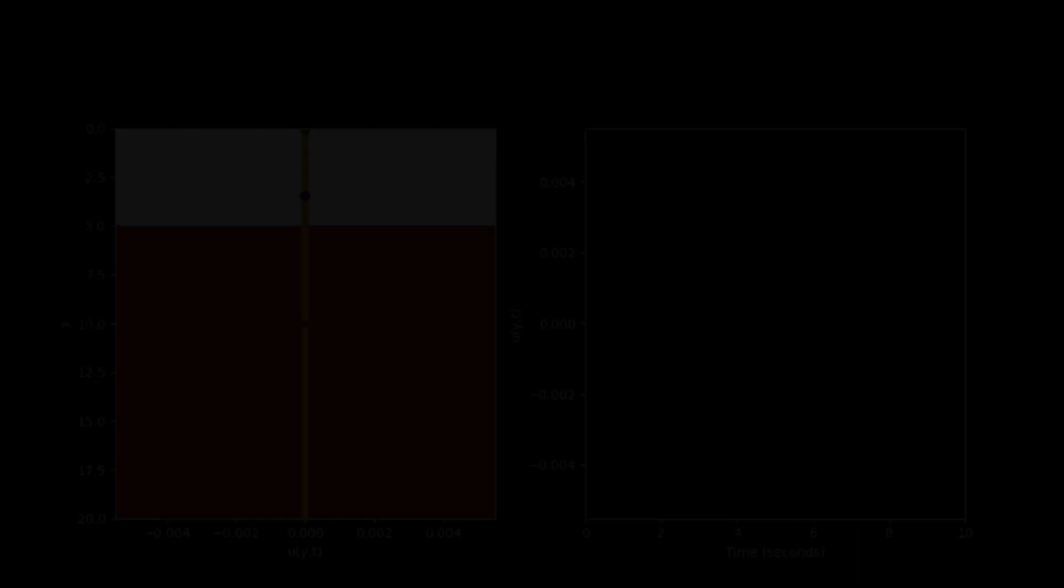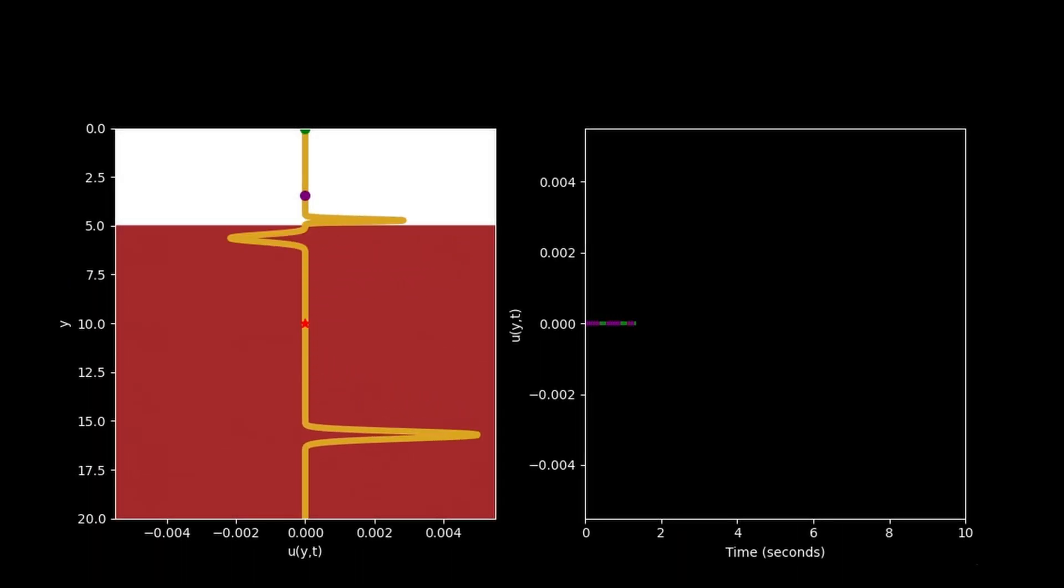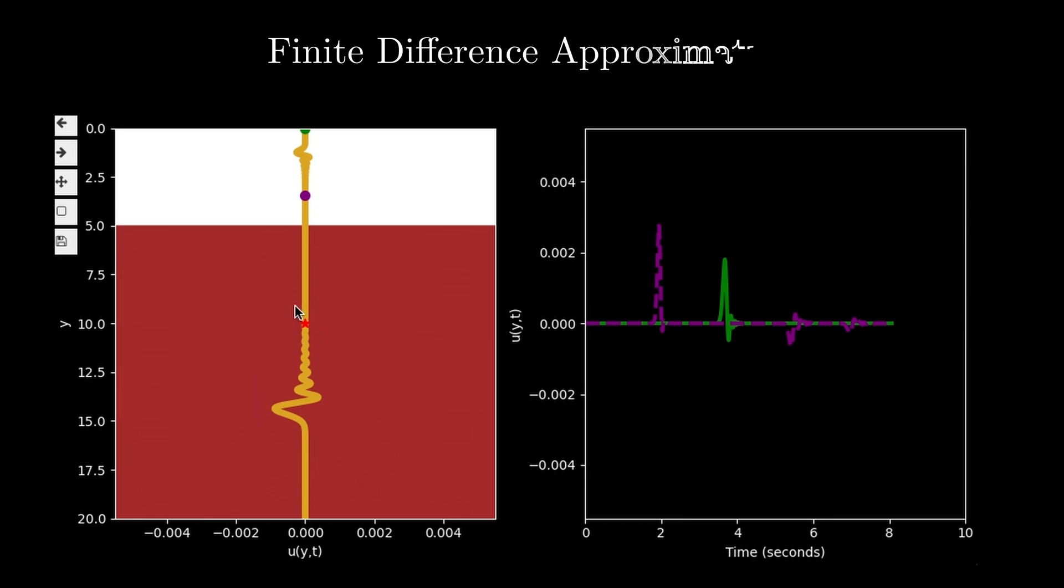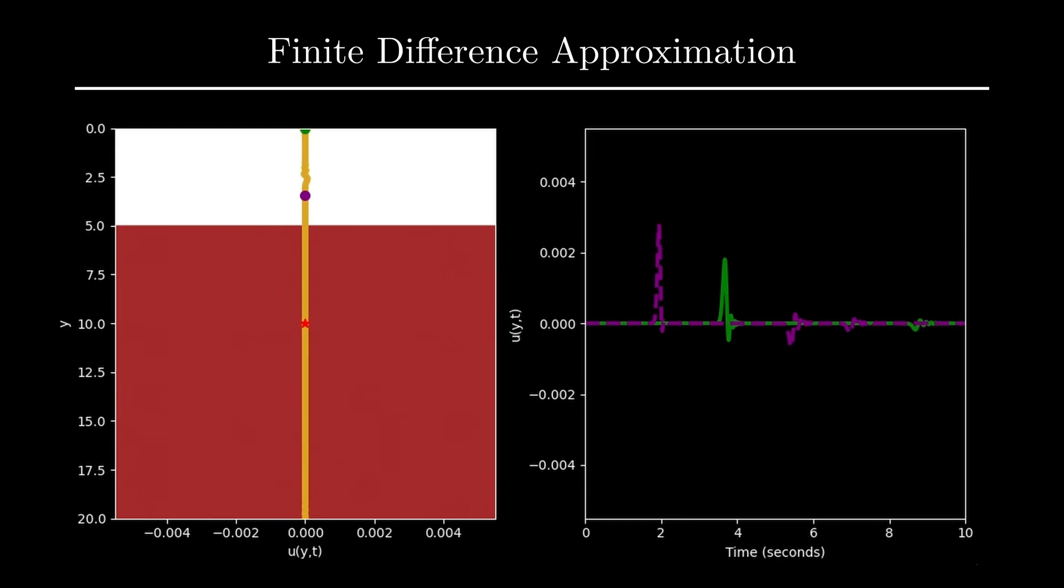While testing the codebase, I often used a larger dy and dt value to keep the execution time shorter. This was when I noticed the wave disintegrating with time. The finite difference approximation had to be one of the main reasons for this.